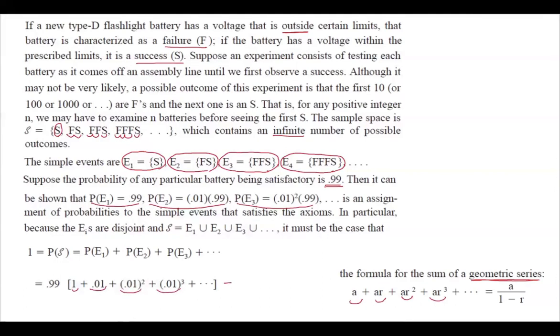So you can basically write this as 99% times 1 divided by 1 minus 1%. We can simplify this as well. 99% times 1 divided by 1 minus 1%, which is 0.99%, you can cancel these two out.